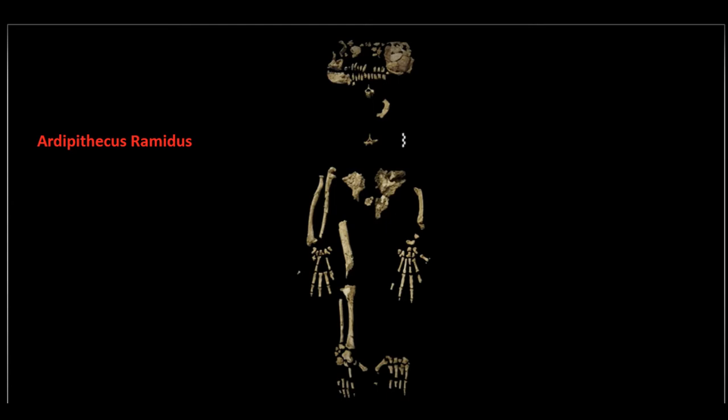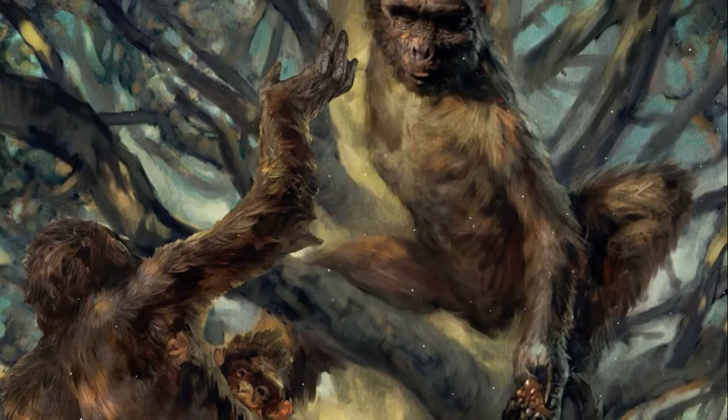To start off, we're going to talk about Ardipithecus ramidus, which was the first one of our ancestors to show any kind of bipedal traits. However, it lived about 4.4 million years ago, shortly after the split in our lineages, and was not fully bipedal. It was likely both quadrupedal and bipedal, meaning it could climb trees and walk on all fours with ease, but it could also get up on two legs and sprint when it needed to.